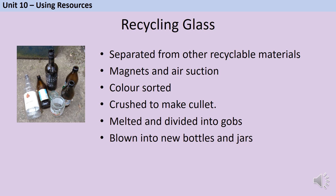Once glass has been separated from other recyclable materials using magnets and air suction, it needs to be colour-sorted, which is often done using lasers. It's then crushed into small pieces called cullet, which are melted in a furnace at over 1500°C. The liquid glass is divided into gobs, which can be blown into new bottles and jars.